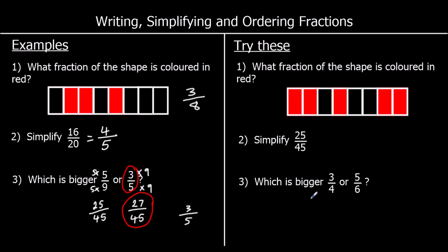Three for you to try, so give them a go. Question one: what fraction of the shape is colored in red? There are 5 bits colored in red out of 8 in total. So we can say that 5 eighths are red.